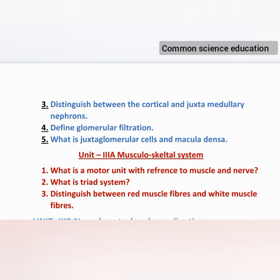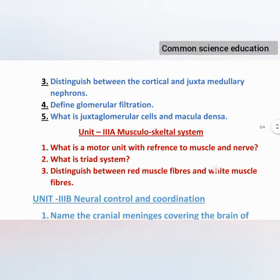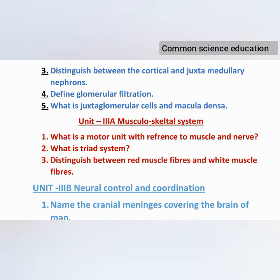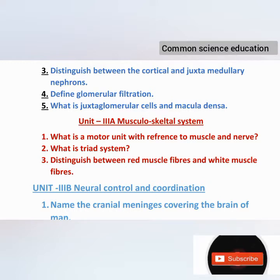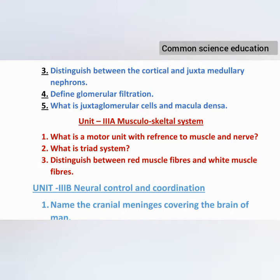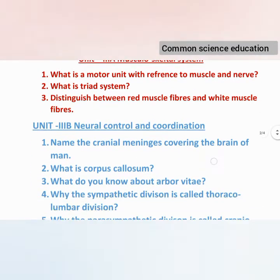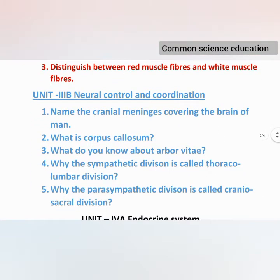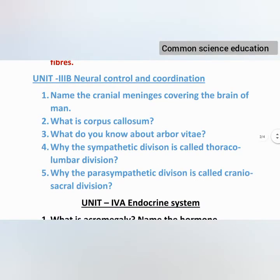Unit 3A: Musculoskeletal System. Unit 3B: Neural Control and Coordination. Unit 3A questions: What is a motor unit with reference to muscles and nerves? What is the triad system? Distinguish between red muscle fibers and white muscle fibers. Unit 3B: Name the cranial meninges covering the brain of man. What is corpus callosum? What do you know about arbor vitae? Why is the sympathetic division called the thoracolumbar division? Why is the parasympathetic division called the craniosacral division?